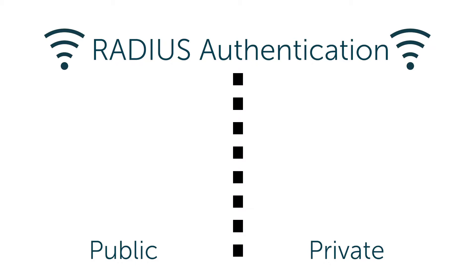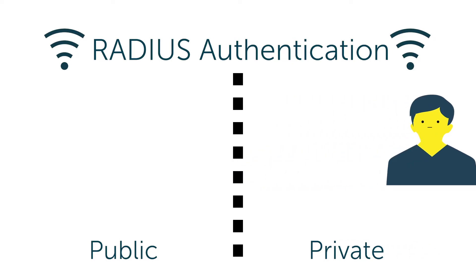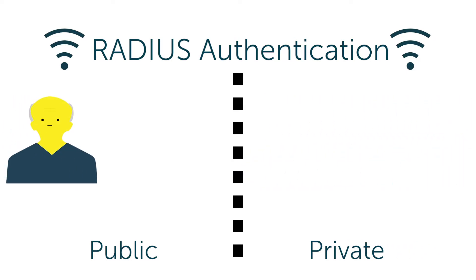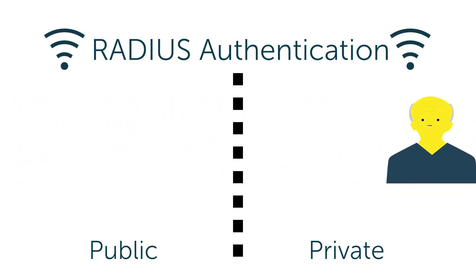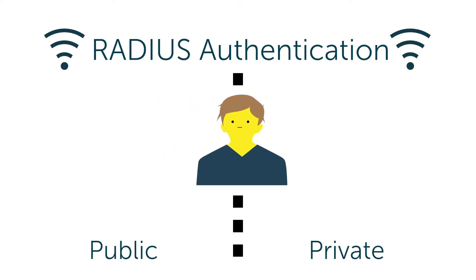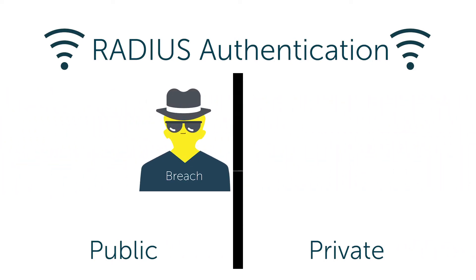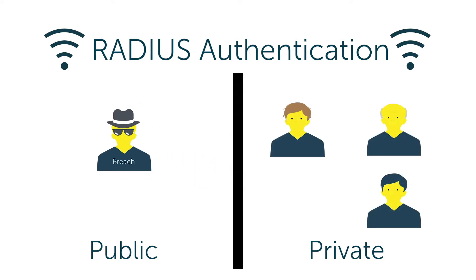The good news is that it is possible to leverage core user identities to manage access to Wi-Fi networks via the RADIUS protocol. In this model, users leverage their unique username and passphrase to gain access to a private network. As a result, Wi-Fi authentication is more secure compared to sharing credentials across a given user base.